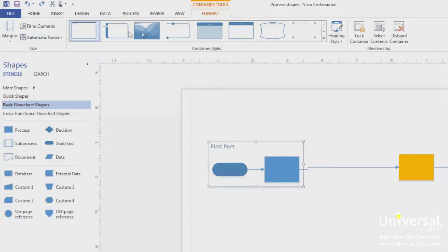Resize the containers. Change the style of the container which will also change the appearance. Lock the container. This means that shapes cannot be added to the container or deleted from it. Select the contents means that all the shapes in the container are selected. Disband container means that the selected container is deleted but the shapes it contained are left behind.